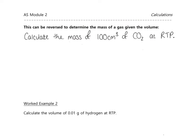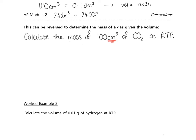We can do these calculations the other way around. If given a volume and asked to calculate the mass — for example, 100 cm³ of CO₂ at RTP — be careful because the units are in cm³. There are two approaches: either convert 100 cm³ to 0.1 dm³ and use volume = n × 24, or keep the volume in cm³ and use 24 dm³ = 24,000 cm³ as the molar gas volume.